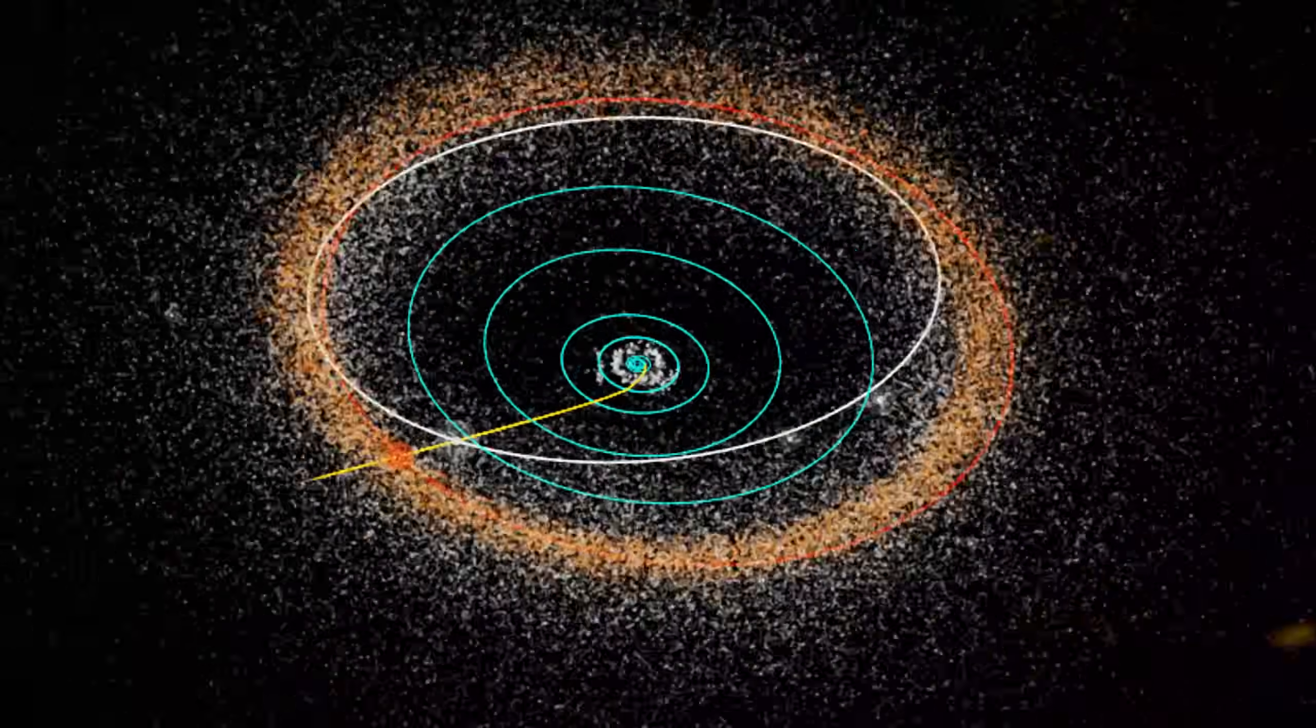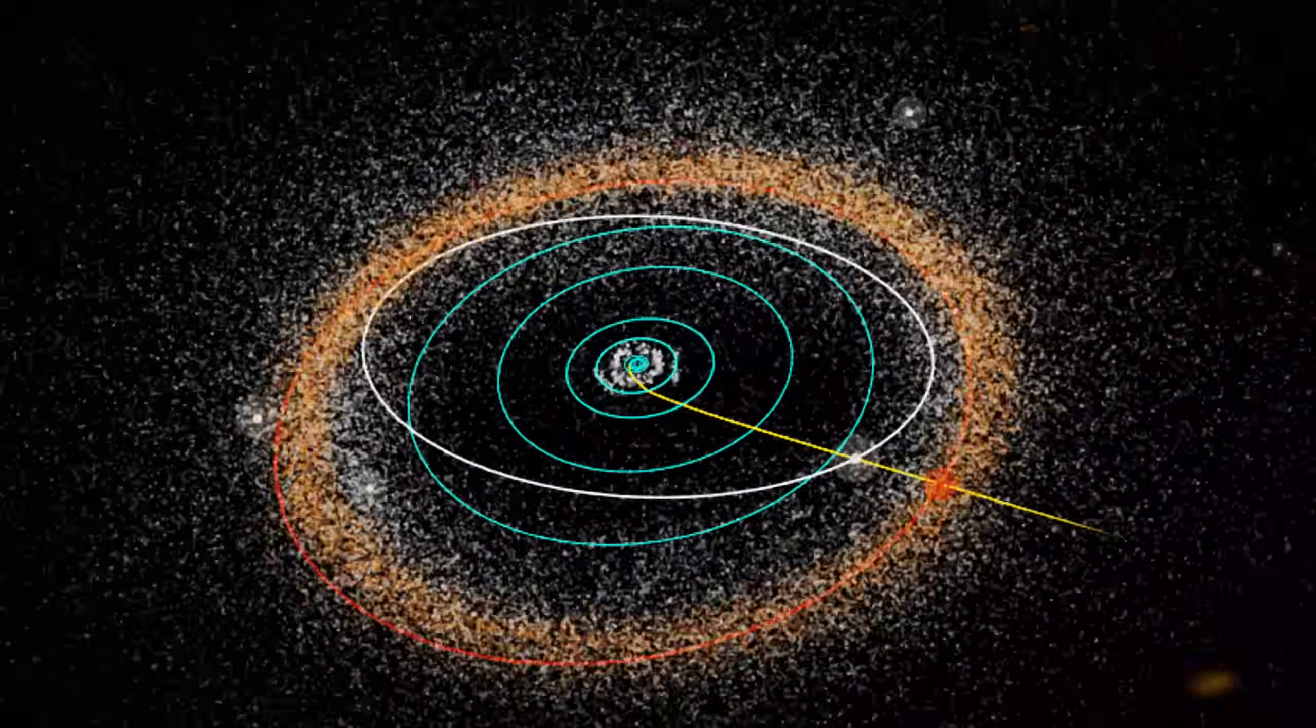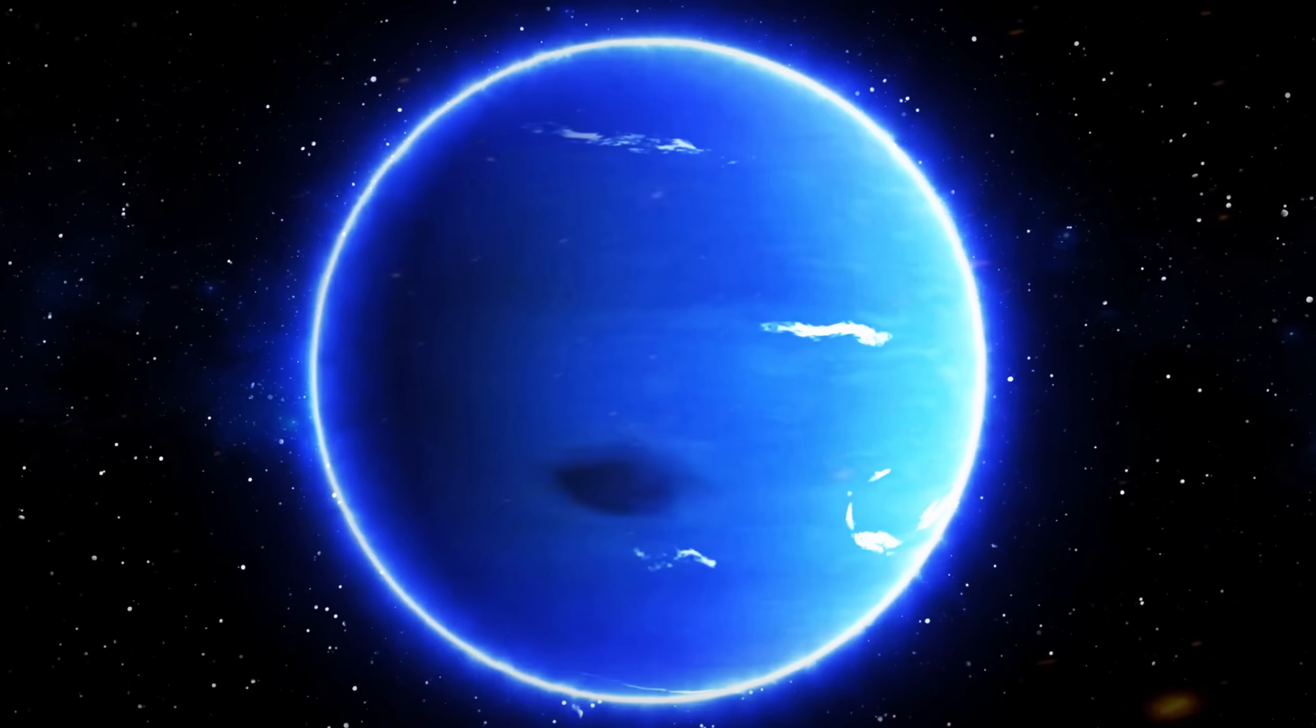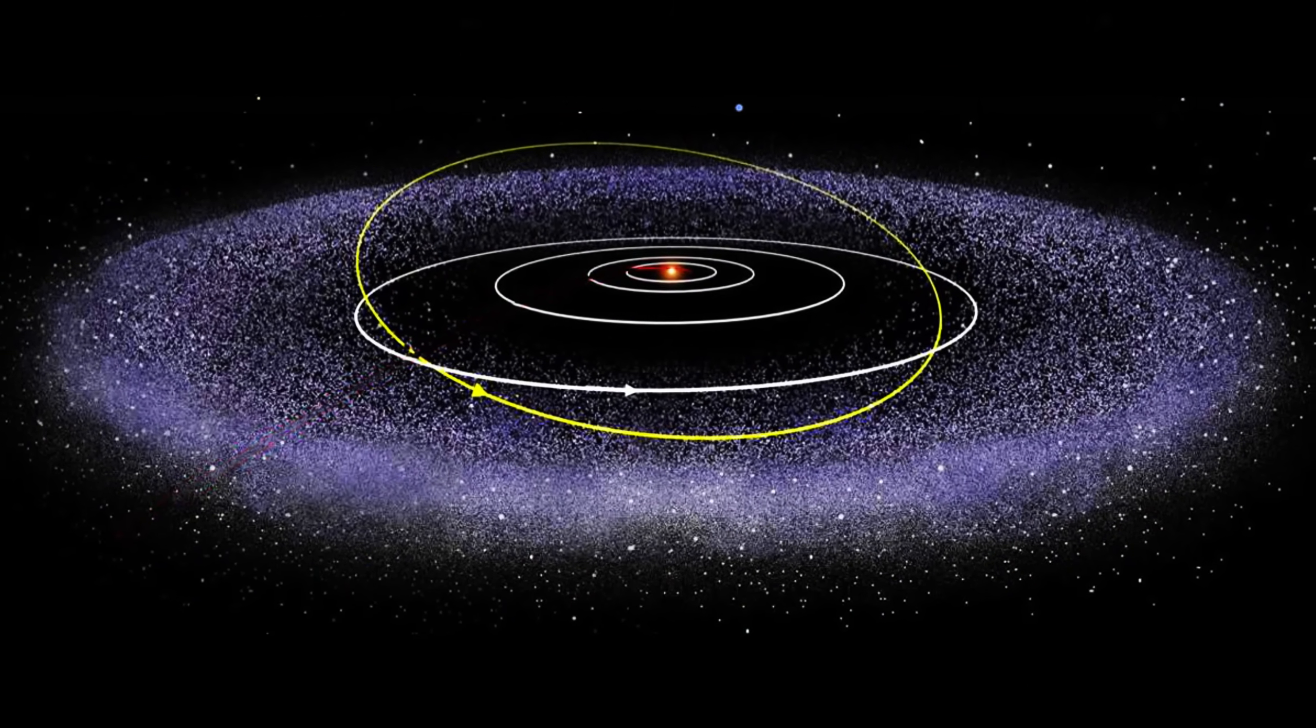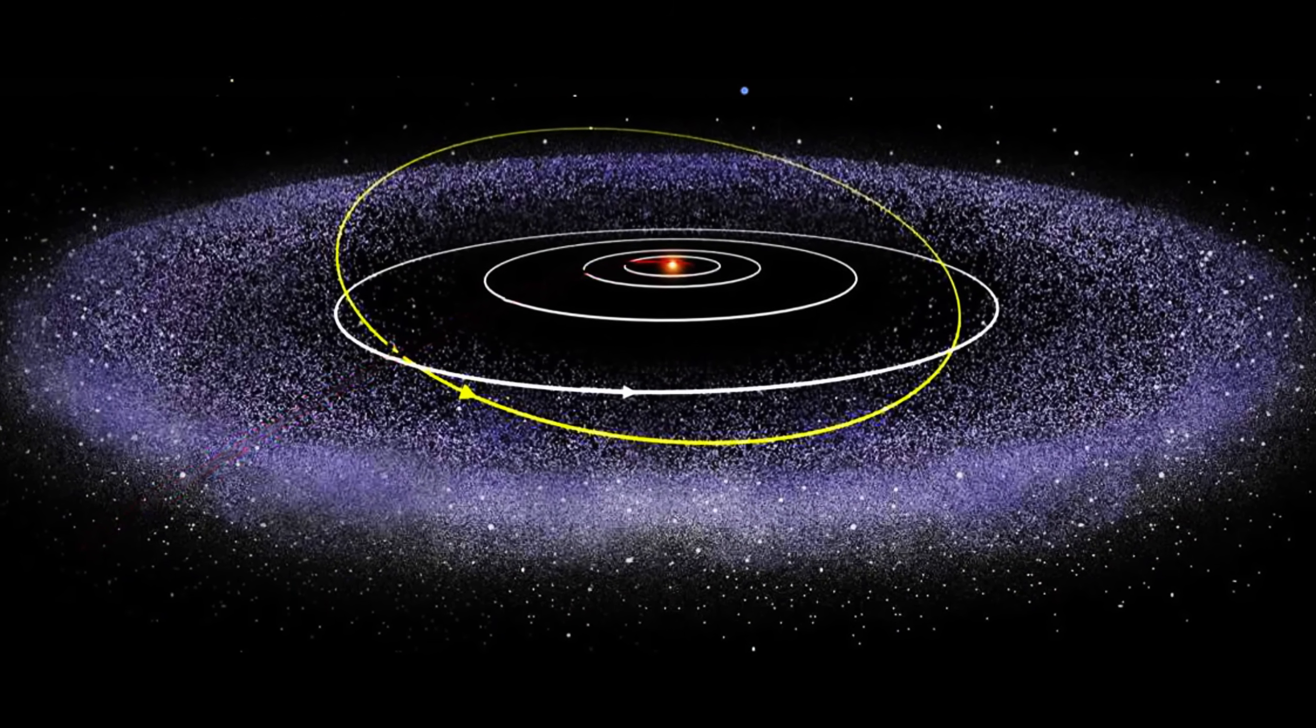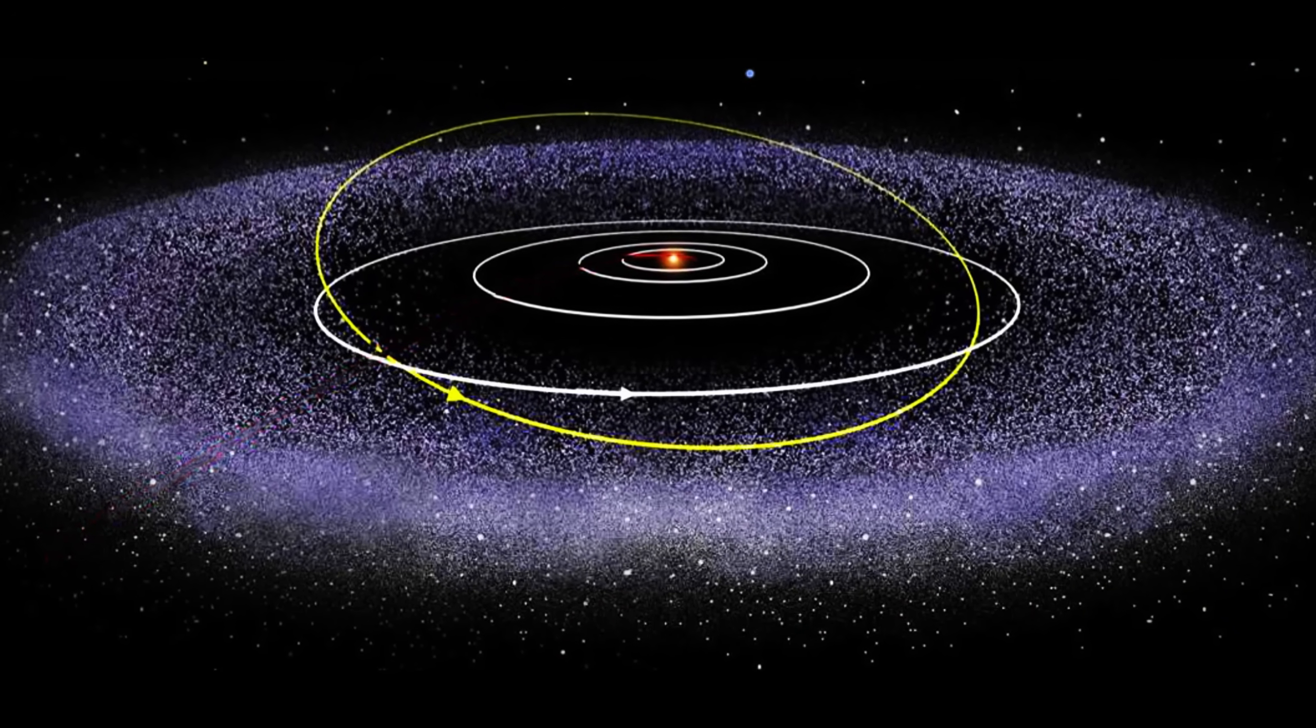The Kuiper Belt is a cold, donut-shaped area in the outer solar system, located beyond Neptune, the eighth planet from the Sun. It was initially intriguing because of its shape, but it later became evident that this would be one of the most fascinating aspects of our solar system.